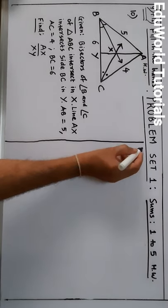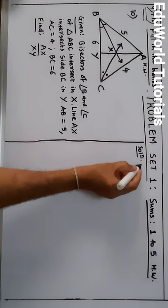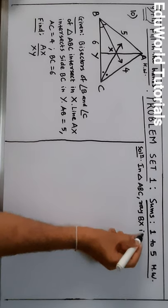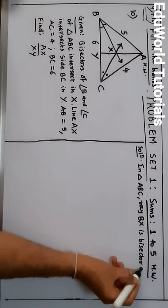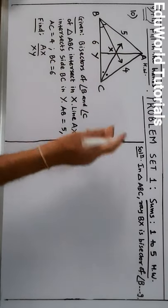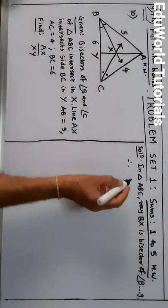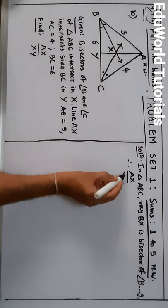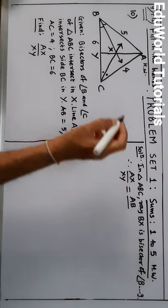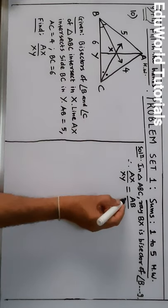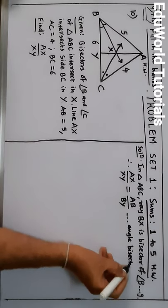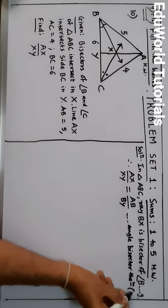Since we have angle bisectors, we should immediately apply the angle bisector theorem. In triangle ABY, ray BX is the bisector of angle B — this is given. By the angle bisector theorem, AX upon XY is equal to AB upon BY. This is result number 1.